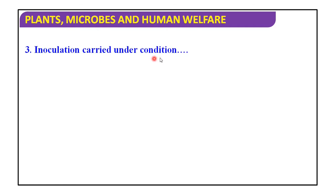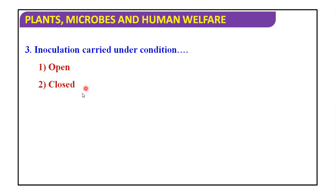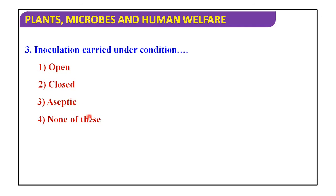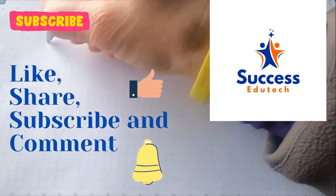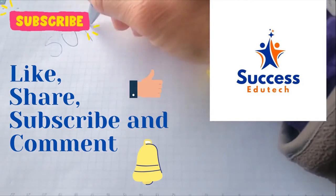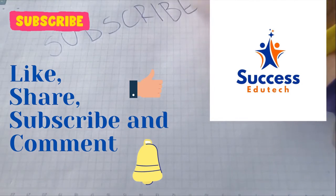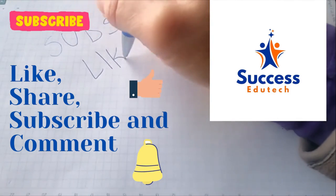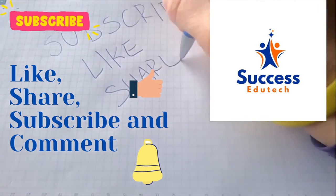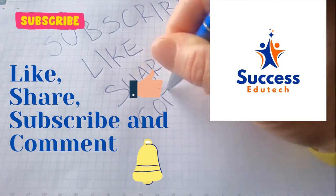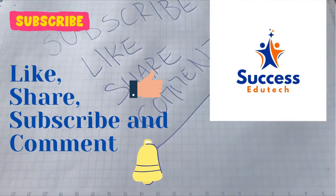Third MCQ: inoculation is carried out under which condition? Open, close, aseptic, or none of these. The answer is aseptic condition. Thank you very much students for watching my videos. Please like, share, and subscribe to our channel. Thank you.